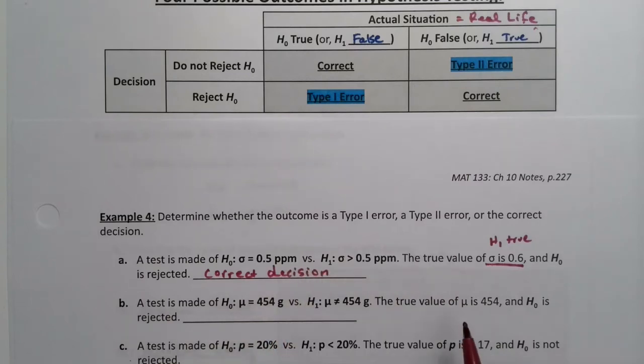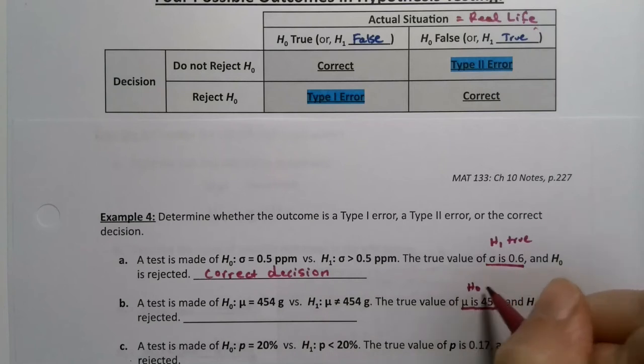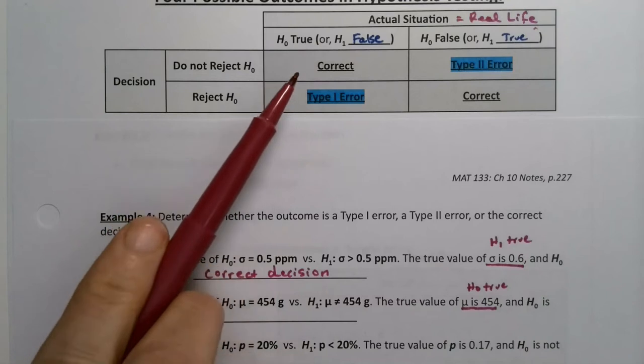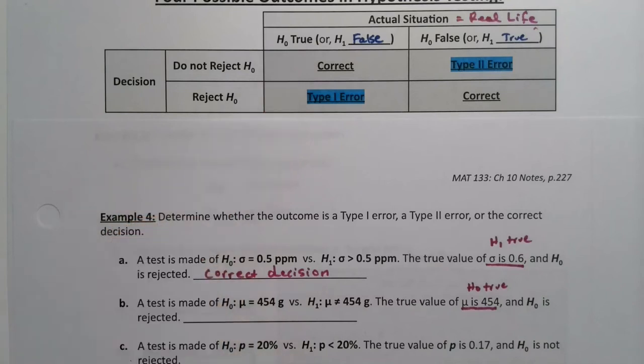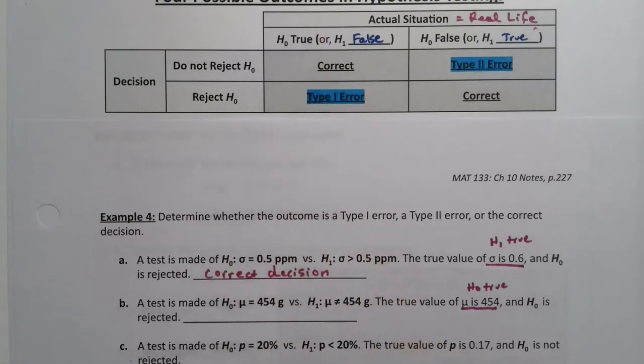Now what about the next one? The true value of μ is 454, and you can see H₀ is that μ = 454 and H₁ is that μ ≠ 454. If the true value really is 454, then that means that H₀ is true. So I'm over on the left-hand column - H₀ is really true, μ is really 454. If I reject that H₀, then I'm making a Type 1 error.